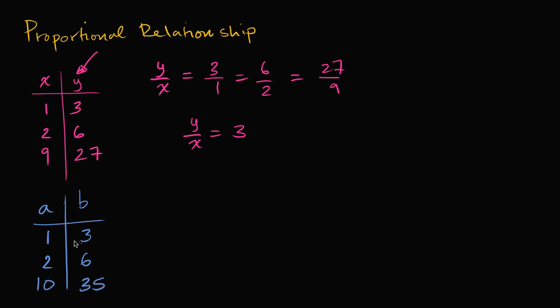So here, you might say, oh look, when a is one, b is three, so the ratio b to a, when b is three, a is one, or when a is one, b is three, so three to one. And that's also the case when b is six, a is two, or when a is two, b is six. So it's six to two. So these ratios seem to be the same. They're both three.